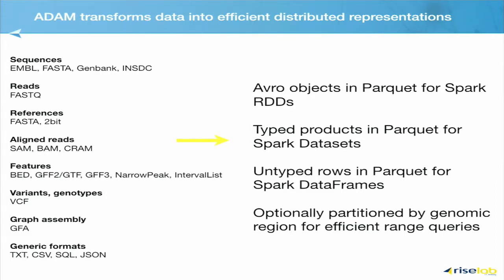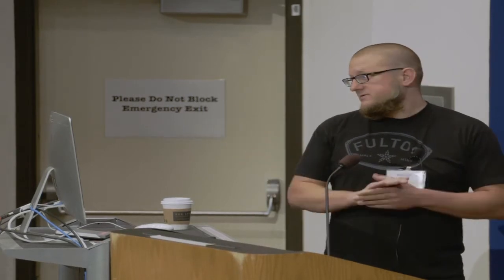So what does ADAM bring to genomics? On the left we have all these different flat file data formats that you're probably all familiar with. We don't like to think of things in terms of flat files — we like to think of things in schema objects: sequences, reads, reference, aligned reads, etc. We bring the data from these flat files into an efficient distributed representation. On disk that would be something called Parquet. Parquet has two advantages: one is that it's a columnar store, so you get compression per column. The other advantage is that the data are partitioned on disk, so you can read and write concurrently to different partitions in parallel across all executor nodes on your cluster.